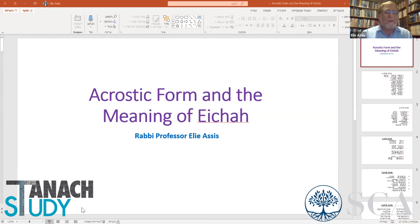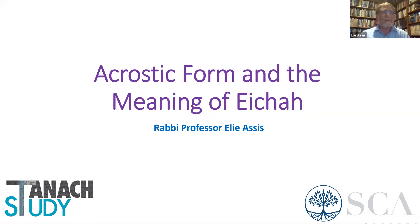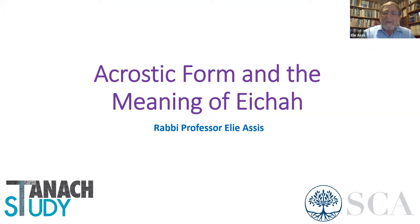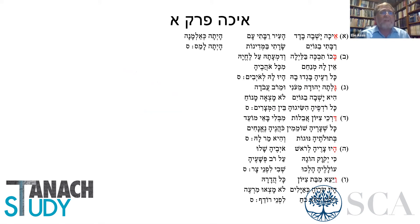We're talking about the acrostic form. There's a very interesting feature in the book of Echa, and that is that all four chapters of Echa are in acrostic form. Let me just introduce this shortly to you — probably you're aware of this, but I'm not sure all the details are clear to everyone.